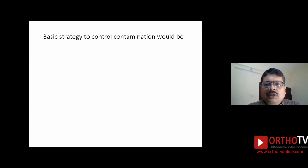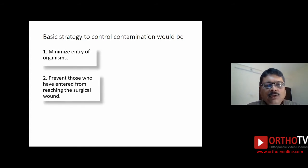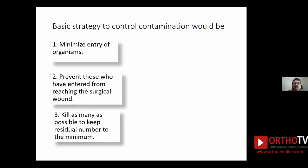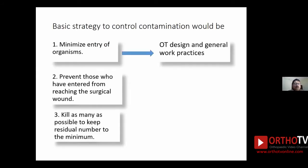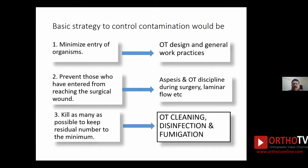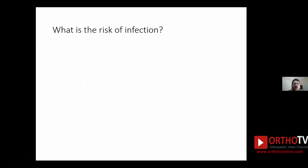The basic strategy for control of contamination in the OT is: first, minimize the entry of organisms; second, prevent those that entered from reaching the surgical wound; and third, kill as many as possible to keep the residual number to a minimum. The first is achieved through OT design and general work practice modifications; the second through asepsis and OT discipline during surgery, use of laminar flow and other infection prevention measures; and the third is where OT cleaning, disinfection, and fumigation come in.